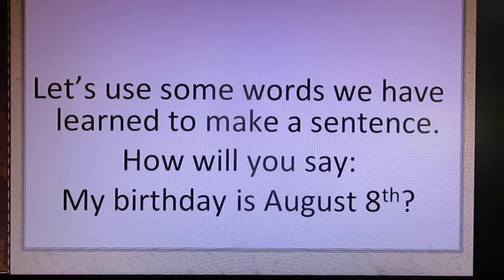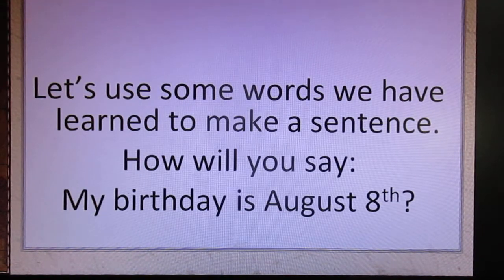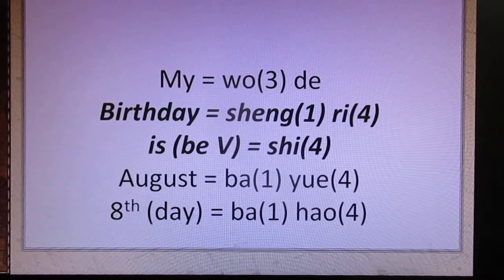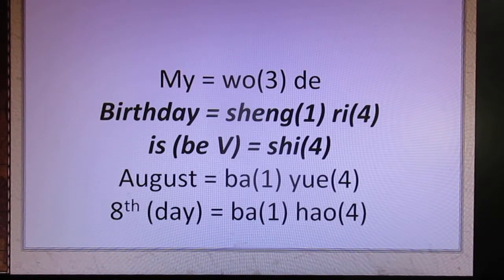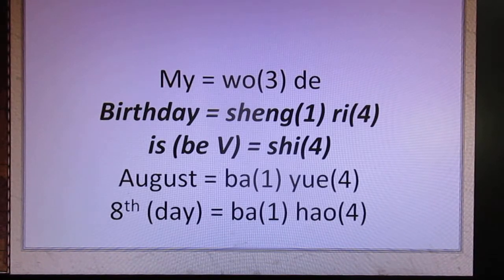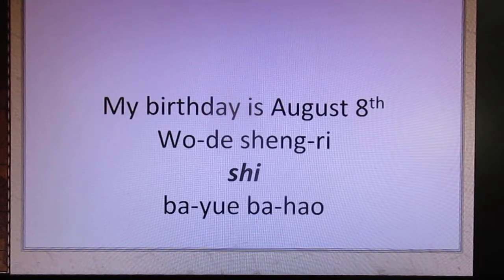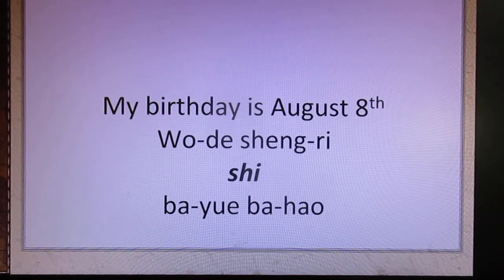Let's use some words we have learned to make a sentence. How will you say 'my birthday is August 8th'? Mine is 我的, birthday is 生日, is is 是. August is 八月, eighth day is 八号. My birthday is August 8th: 我的生日是八月八号.